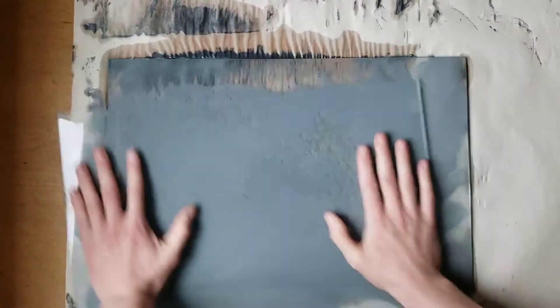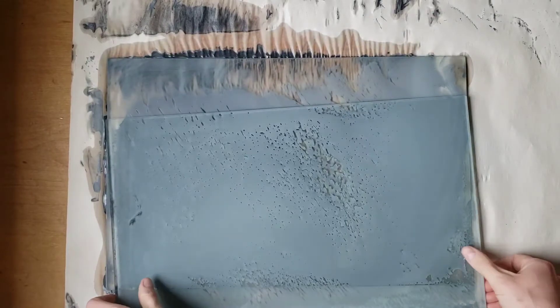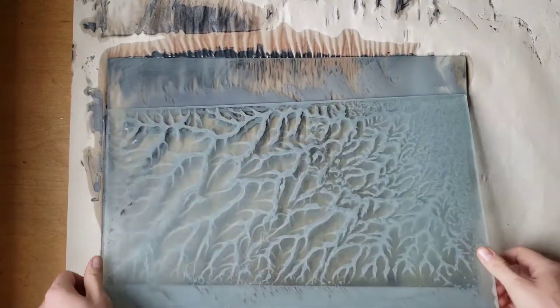If you haven't worked with carborundum before, it's essentially finely ground zinc particles that can be found online at printmaking supply stores, typically used in lithography for graining stones.